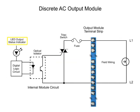When the output status is commanded from the PLC program, voltage is transmitted to the LED of the optical isolator.